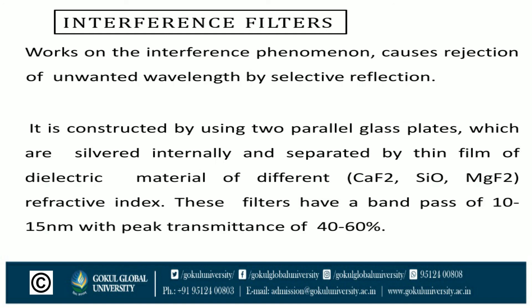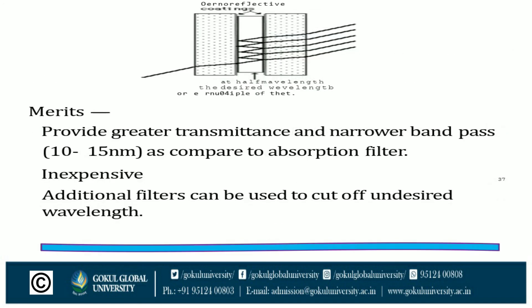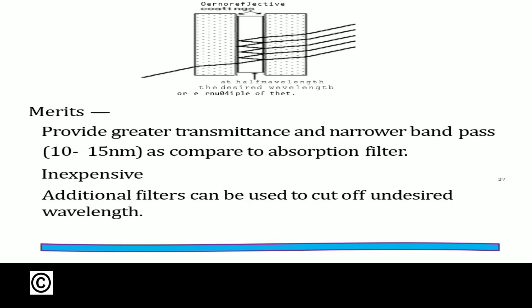These interference filters have a band pass of 10 to 15 nanometers with peak transmittance of 40 to 60 percent. The merits are greater transmittance and narrower band pass of 10 to 15 nanometers as compared to absorption filters. They are also inexpensive, and additional filters can be used to cut off undesired wavelengths.